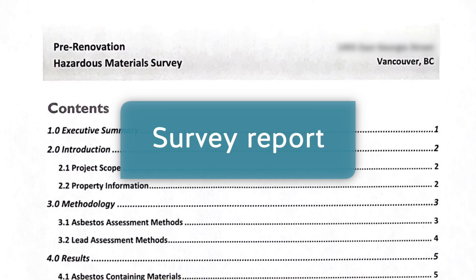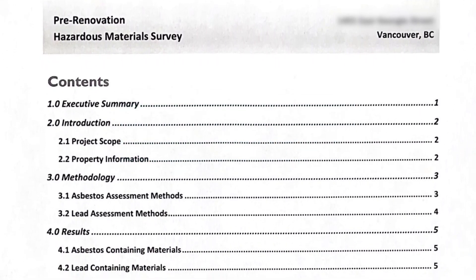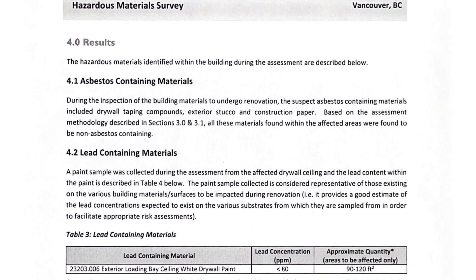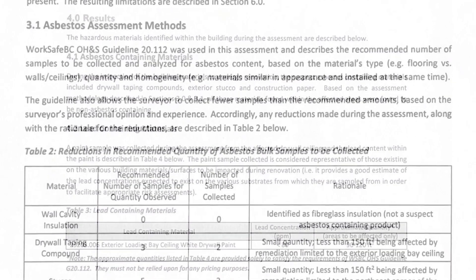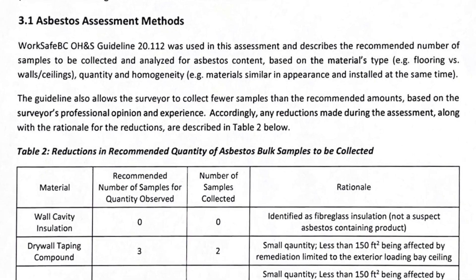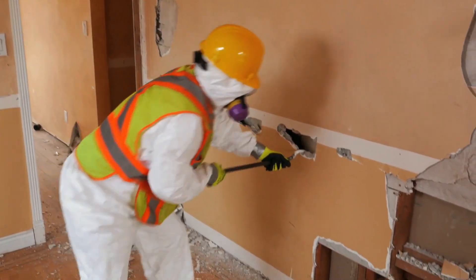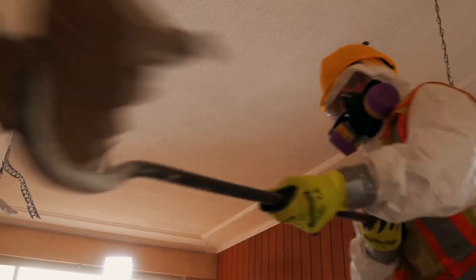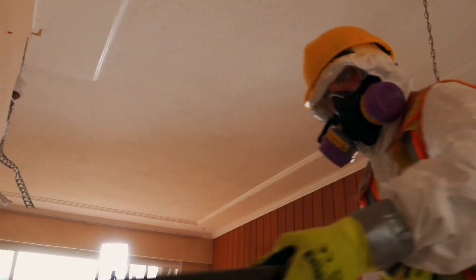That lab report goes to the consultant who prepares the survey report, which is probably one of the most important reports you can get. It lists the samples collected, what the results are, and how that impacts the rest of the house. For example, if you take three samples of drywall mud and it tests positive for asbestos, you make the assumption that all of it is, and the survey report must include how much material — drywall, flooring, ceiling texture — has to be removed, and where all the quantities are.